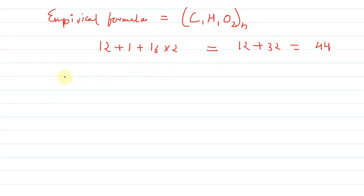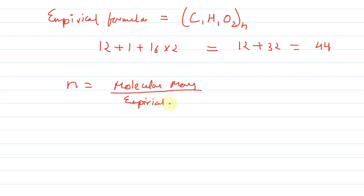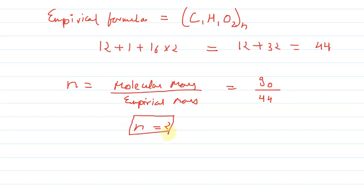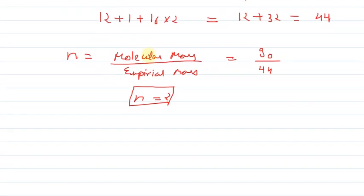Now we know that the value of N is equal to molecular mass upon empirical mass. Our molecular mass, which we calculated from vapor density, was 90, and our empirical mass is 44. When we solve this, the value of N comes out to be nearly equal to 2.